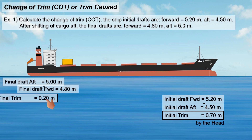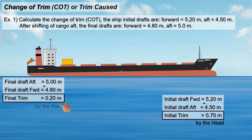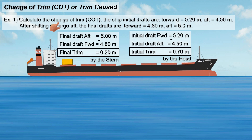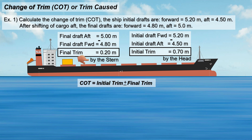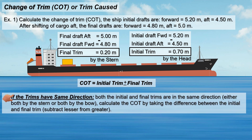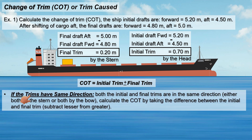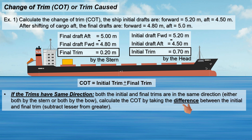The ship's final trim is 0.20 meter by the stern. When calculating the change of trim, whether to add or subtract the initial and final trim depends on their directions. If both the initial and final trims are in the same direction — either both by the stern or both by the head — calculate the change of trim by taking the difference, just subtract the lesser from the greater.